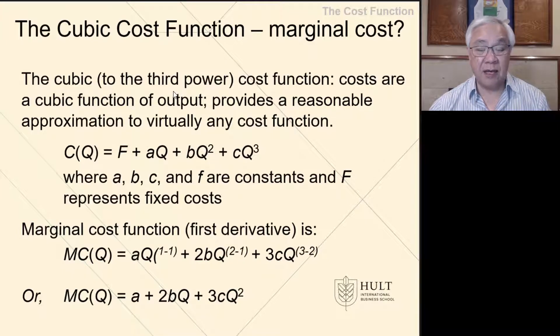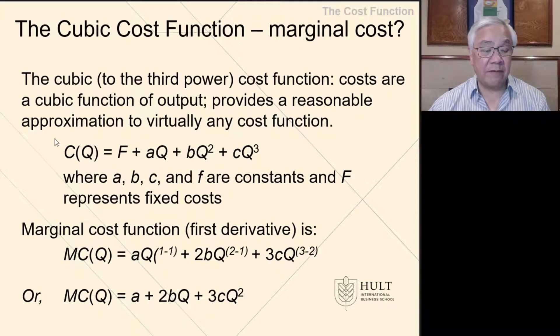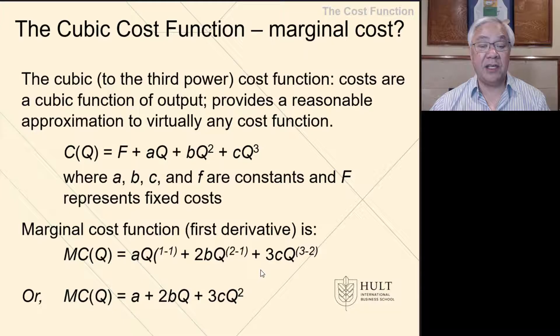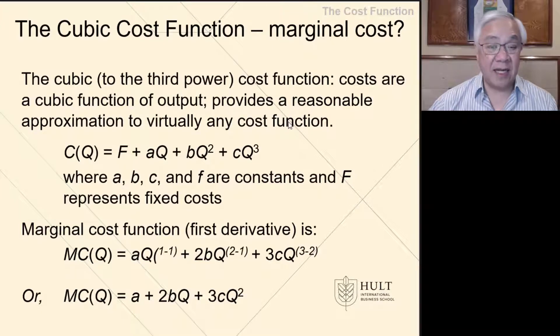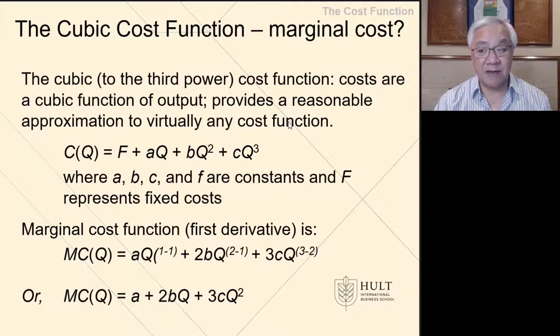The marginal cost, and we know now I hope, that marginal cost is the first derivative. So the marginal cost of this function is the first derivative of this cost function. So the F disappears, it goes AQ to 1 minus 1, and then 2BQ to the 2 minus 1, and then 3CQ to the 3 minus 2. And that simplifies to: the marginal cost of Q equals A plus 2BQ plus 3CQ squared. So that is how we would look at a cubic cost function.